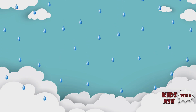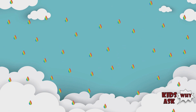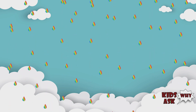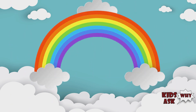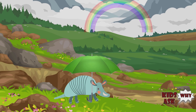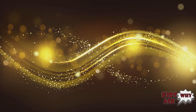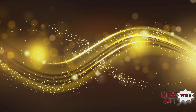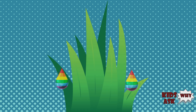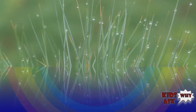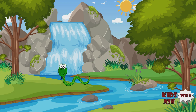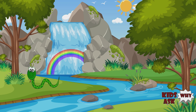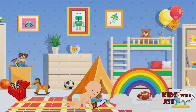Each raindrop actually makes its own rainbow, but when there are so many raindrops at the same time, the rainbows become big enough for us to see with the naked eye. Rainbows normally appear from rain, but they can happen wherever light is being bent inside water droplets. Rainbows can be seen in mist, fog, spray, and dew. Another common place to see the rainbow effect is near waterfalls.